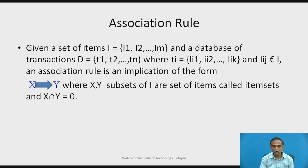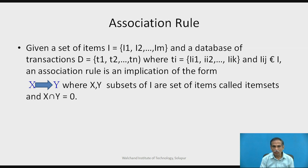Formally, we define association rules as: given a set of items I = {i1, i2, ..., im} and a database of transactions D = {T1, T2, ..., Tn}, where each transaction Ti is a subset of I, an association rule is an implication of the form 'if X then Y', where X and Y are subsets of the item set I, and X ∩ Y = ∅ — meaning X and Y are independent of each other. X is called the antecedent of the rule and Y is called the consequent.